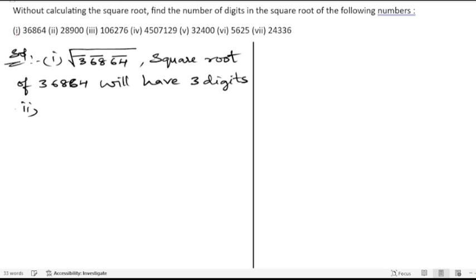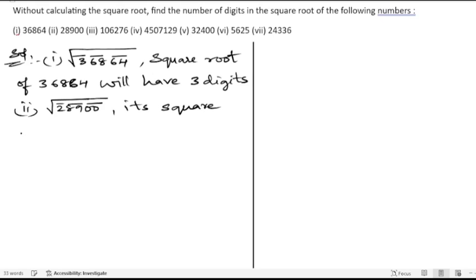In the second problem, we have 228900. We put a bar on 00, then 89, then 2 — we get three bars again. So its square root will have three digits.